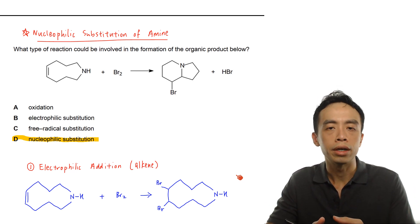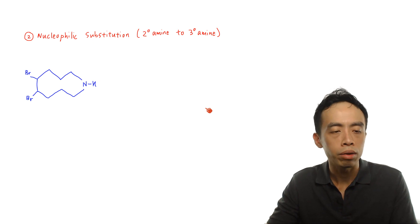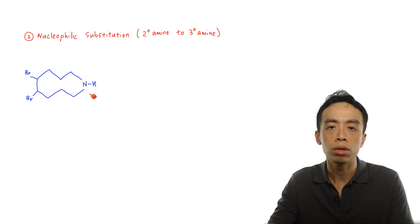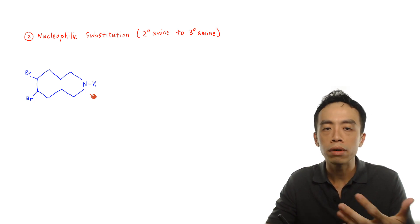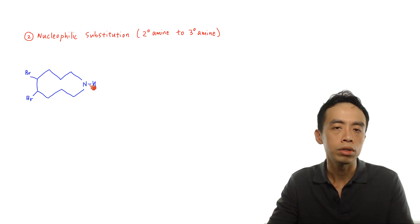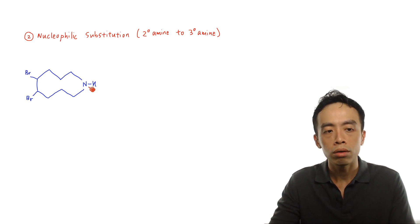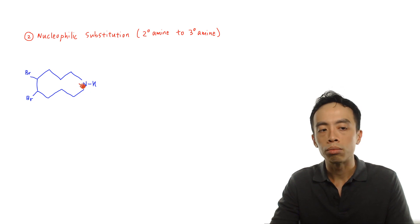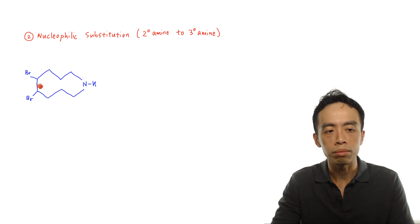Now let's figure out the mechanism — how do we convert the intermediate at the end of the first step into the final product, converting one big cyclocompound into two smaller cyclocompounds? In nucleophilic substitution of amine, the nitrogen of the amine functions as a nucleophile and attacks the haloalkane — in this case, the bromoalkane. This compound is symmetrical, so whether the nitrogen attacks the bromine on top or at the bottom doesn't matter; the product is the same because there is a horizontal mirror plane.